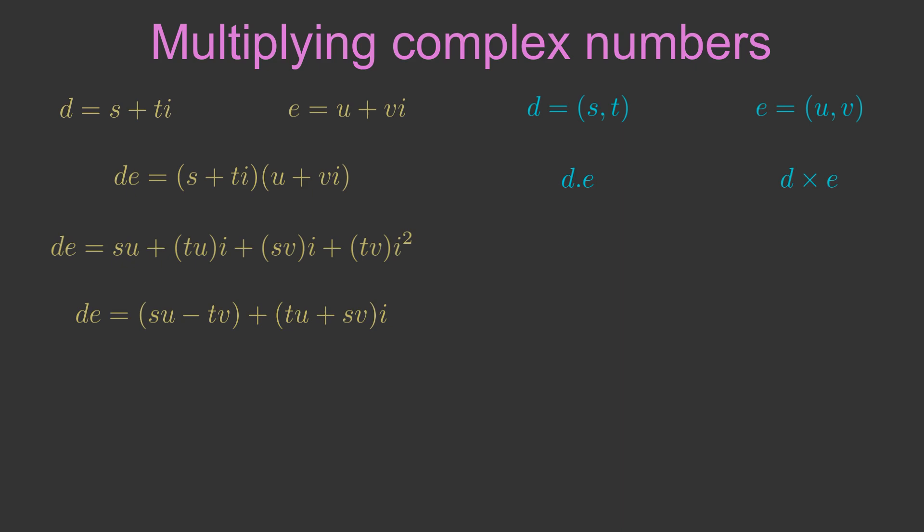Well if we pre-multiply a 2-vector, e in this case, by a 2x2 matrix, we get a 2-vector as a result. We can use the 2x2 matrix j, k, l, m and multiply by e, which is u, v.